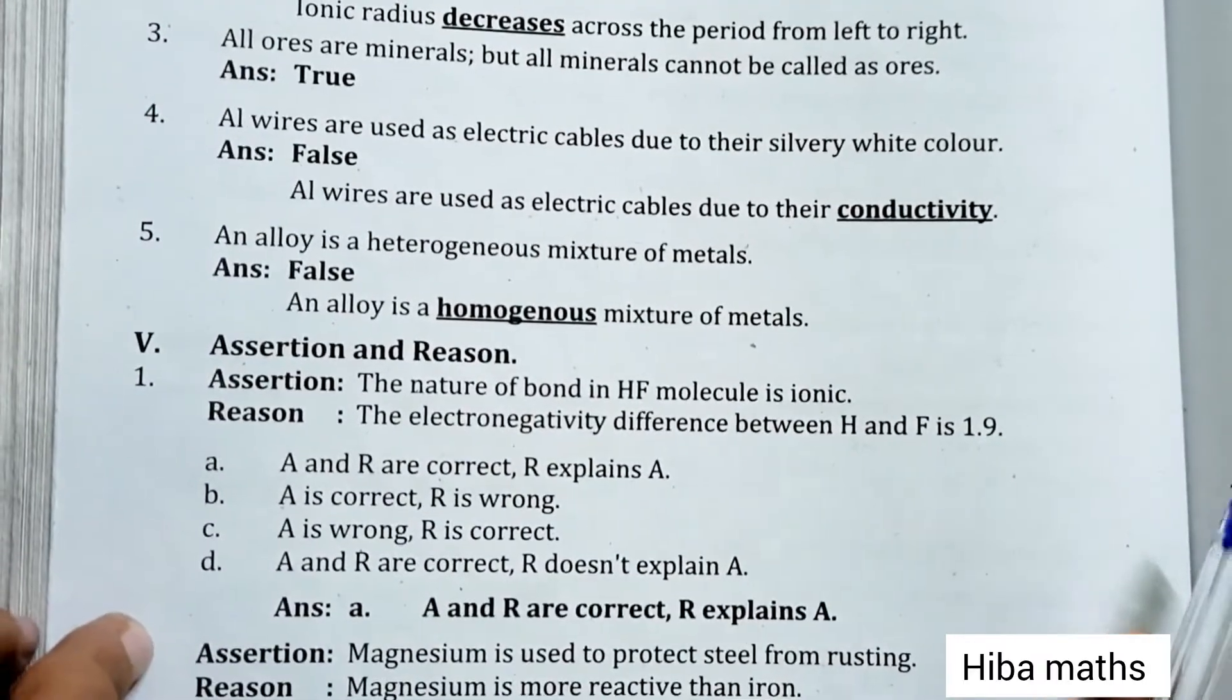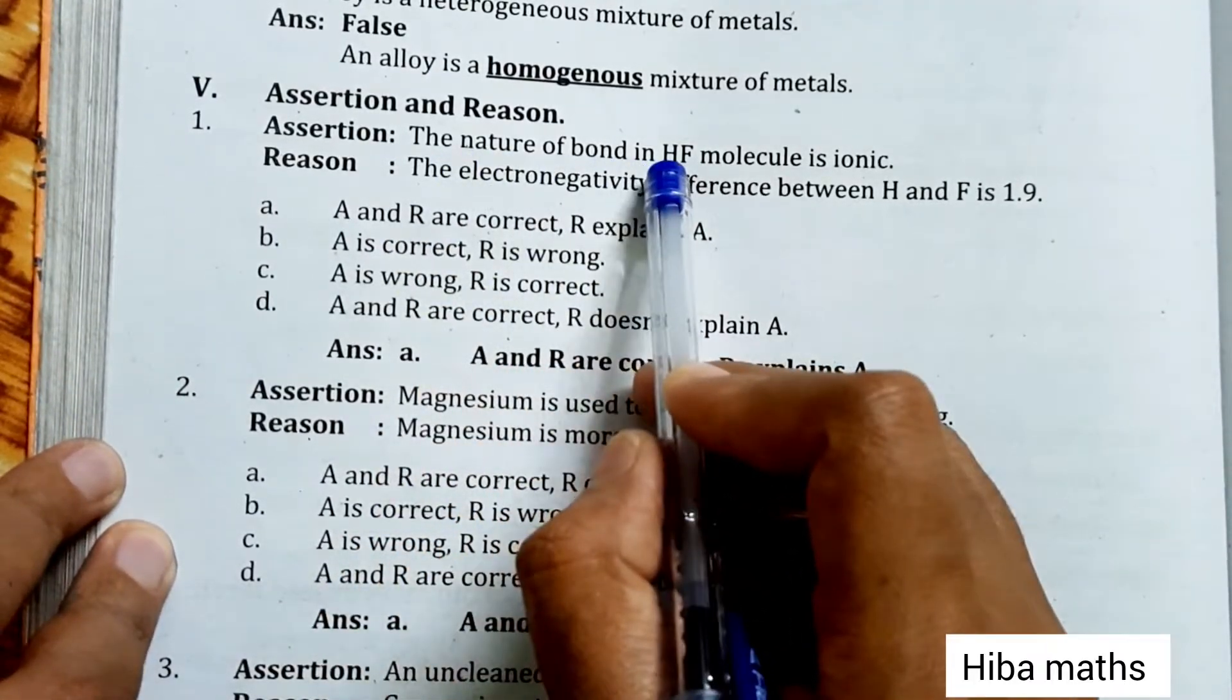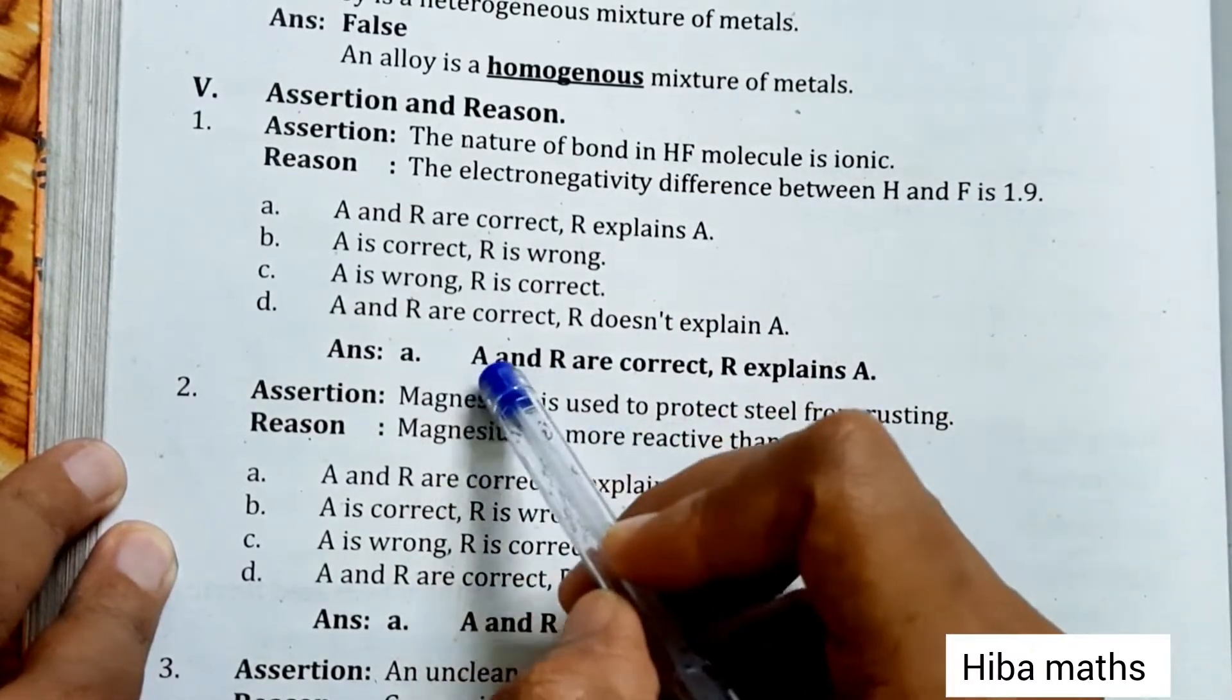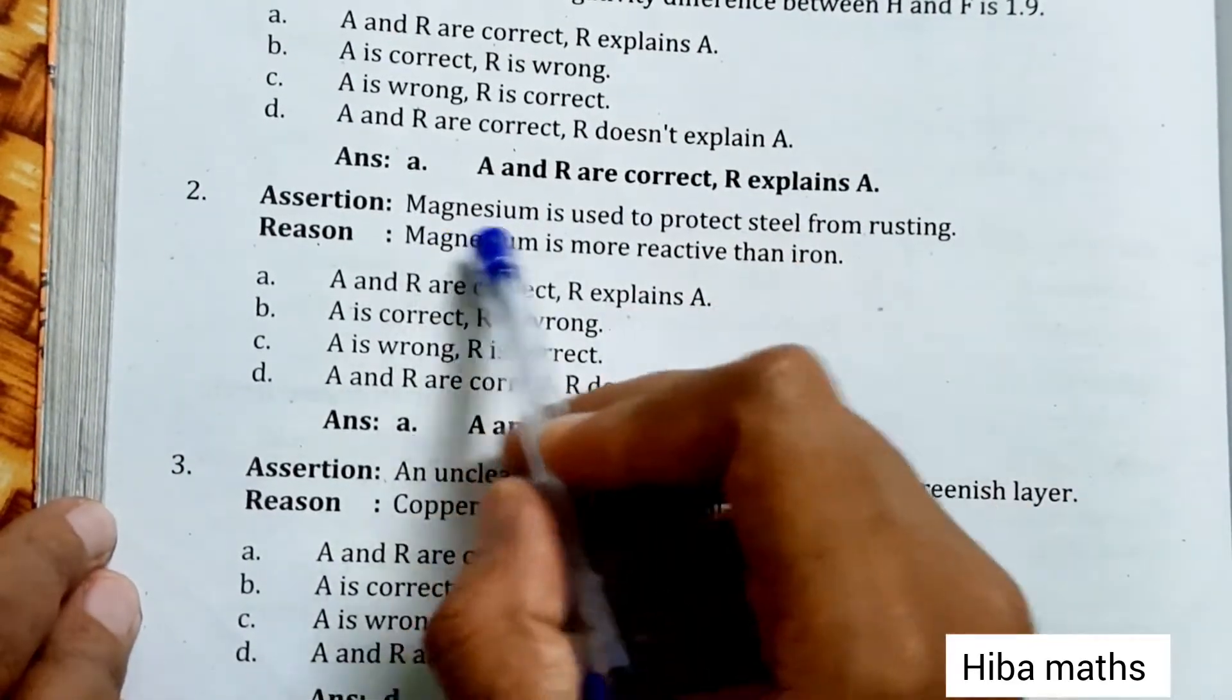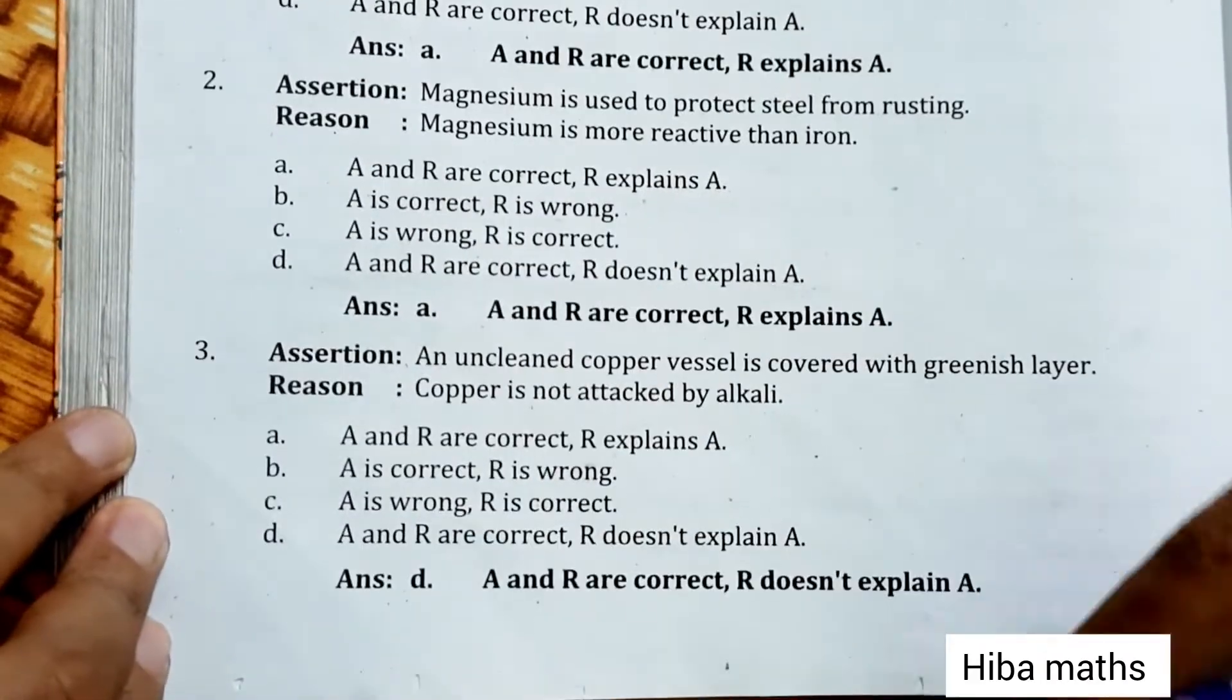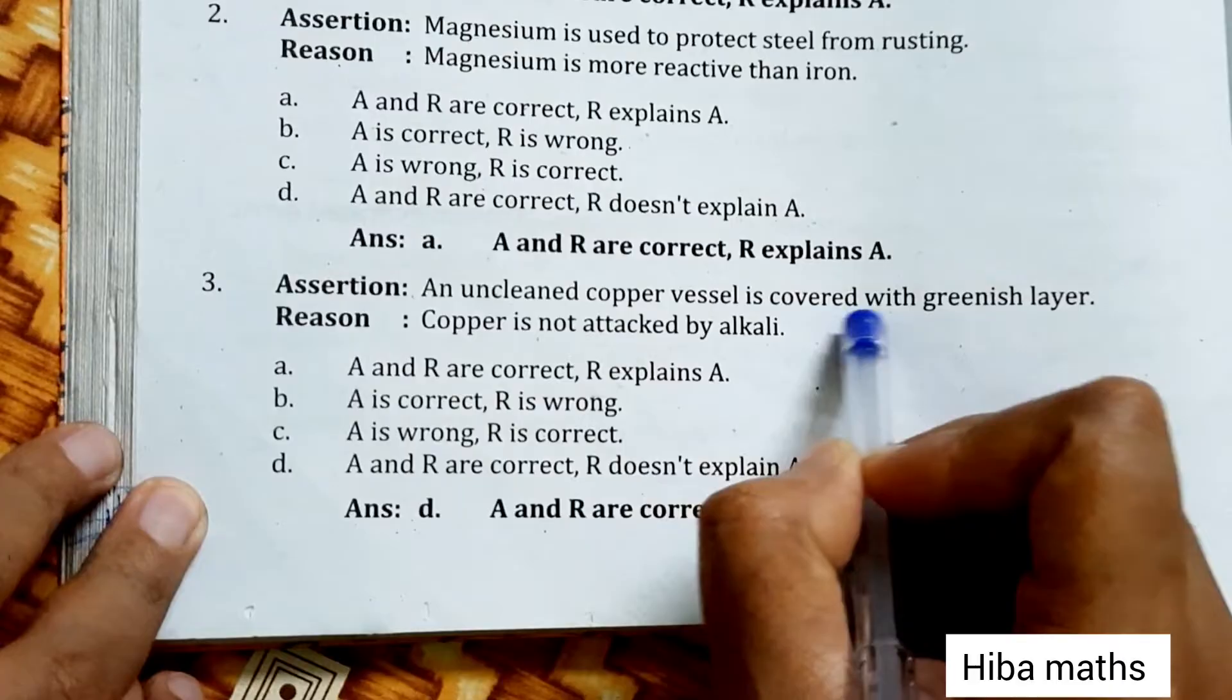An alloy is a heterogeneous mixture of metal - false, it's homogeneous. Assertion and reason: The nature of bond in HF molecule is ionic. The electronegativity difference between H and F is 1.9. A and R are correct and R explains A. Magnesium is used to protect steel from rusting. Magnesium is more reactive than iron. Answer: A and R are correct, R explains A.